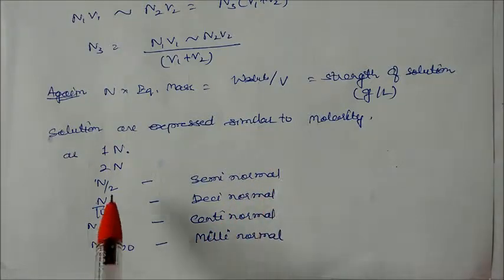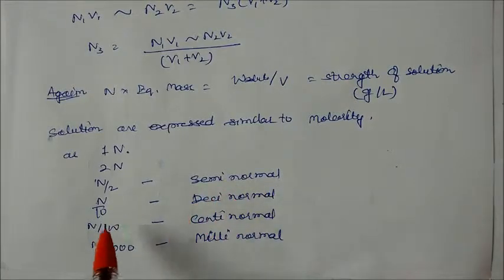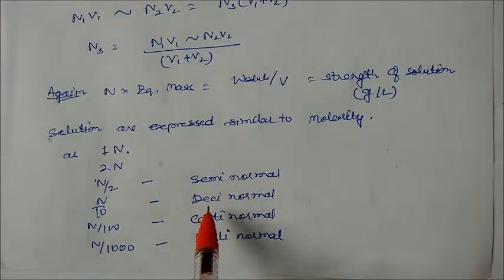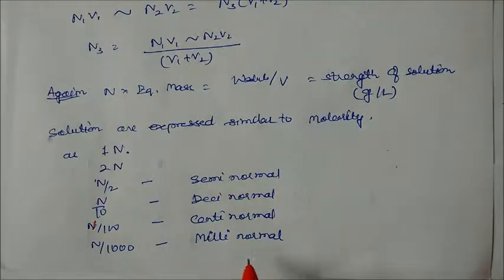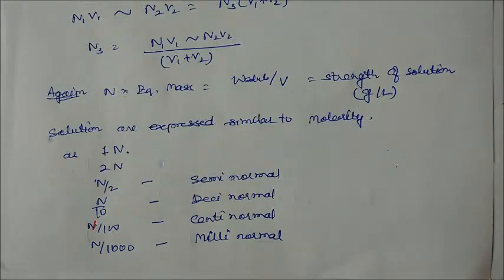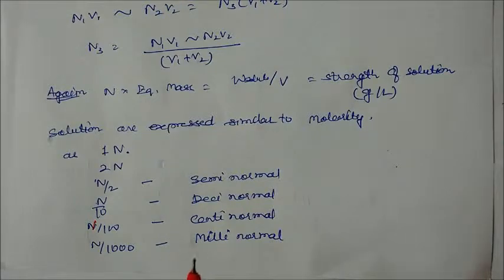Just as for molarity, normality solutions are expressed similarly: one normal, two normal; N/2 is called semi-normal; N/10 is decinormal; N/100 is centinormal; N/1000 is millinormal. You should not confuse these terms while solving numericals. Try to solve all the problems given in the problem sections with solutions, and then we can provide more practice problems on these types of questions.